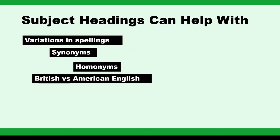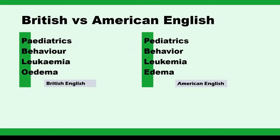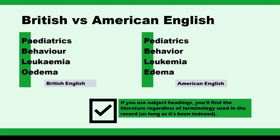Subject headings are useful because they can help account for variations in spellings, synonyms, homonyms, and British versus American English. Consider that there are terms like pediatrics, behavior, leukemia, edema, and more that have very different spellings depending on whether you're using British or American English. Subject headings can help us find literature regardless of the terminology used in the record, simply by virtue of the record being indexed with the subject heading.